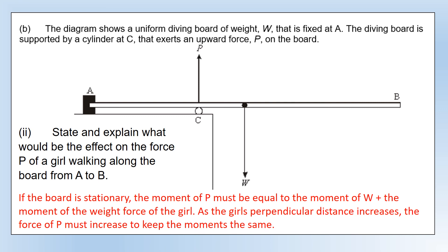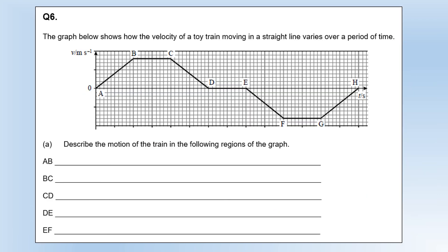Finally, looking at some motion graph work. Describe the motion of the train in the following regions of the graph. A lot of people knew what was going on but didn't describe it as clearly as they needed to. Between A and B it's constant acceleration—it's a straight line graph, so the acceleration is constant.